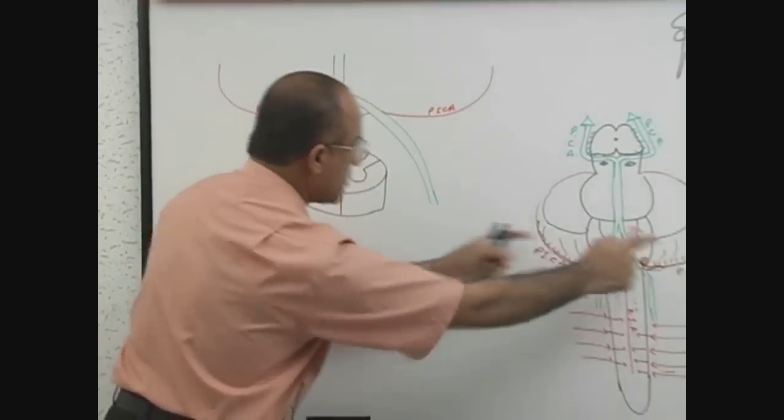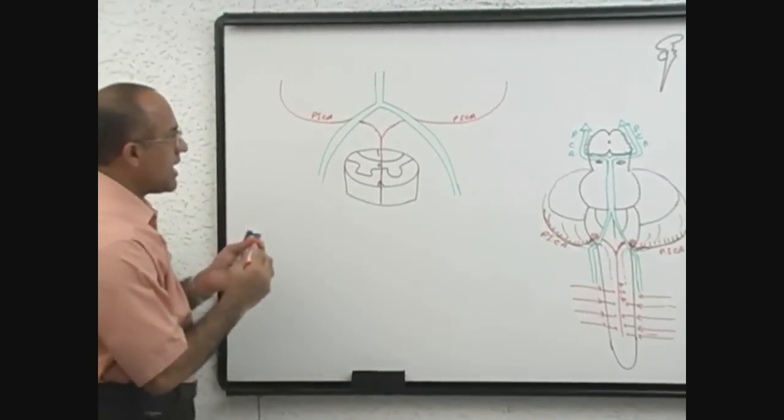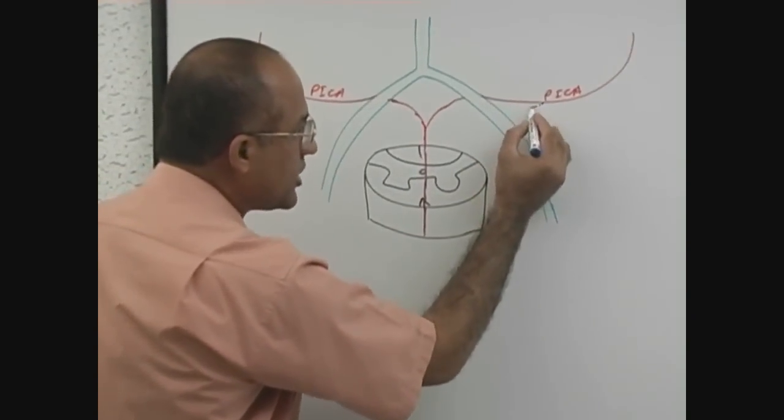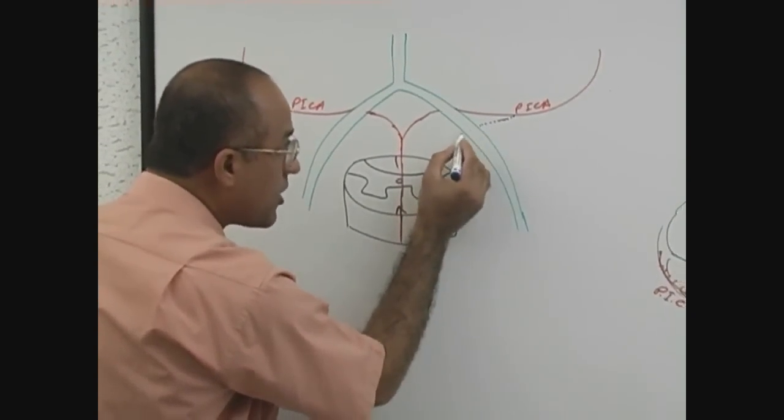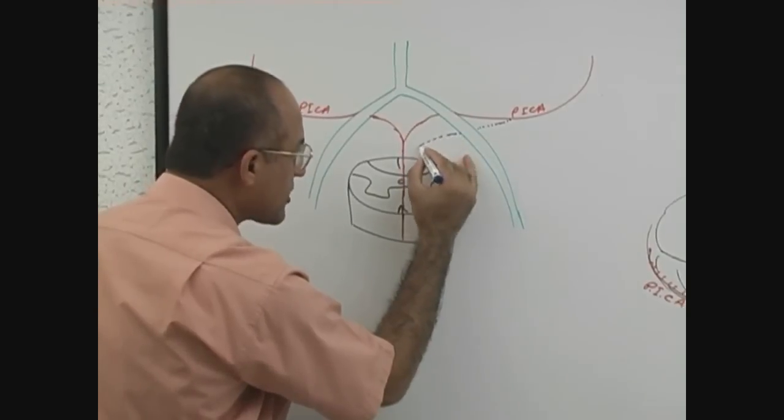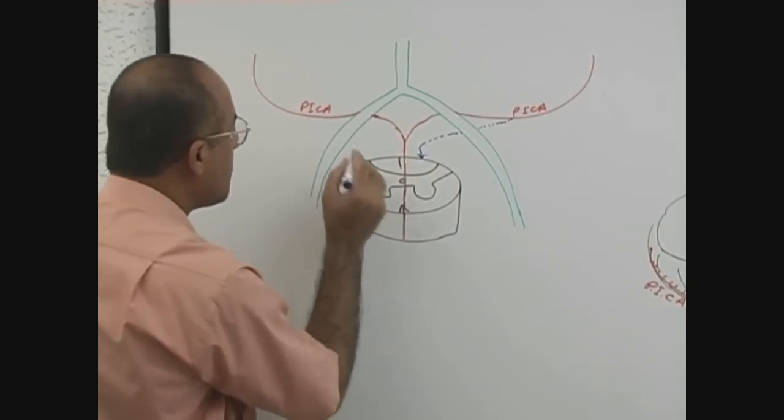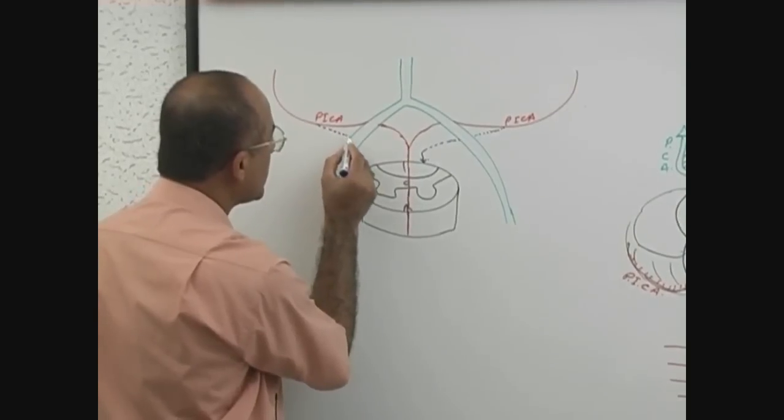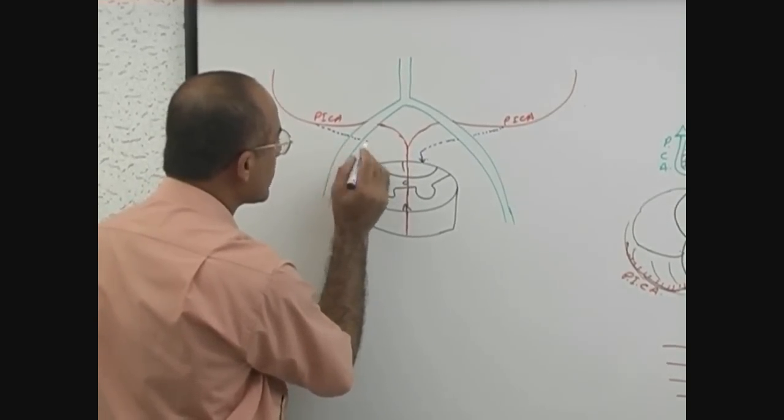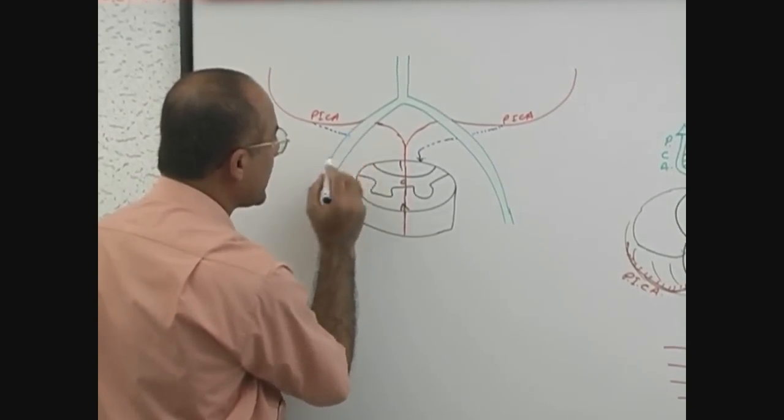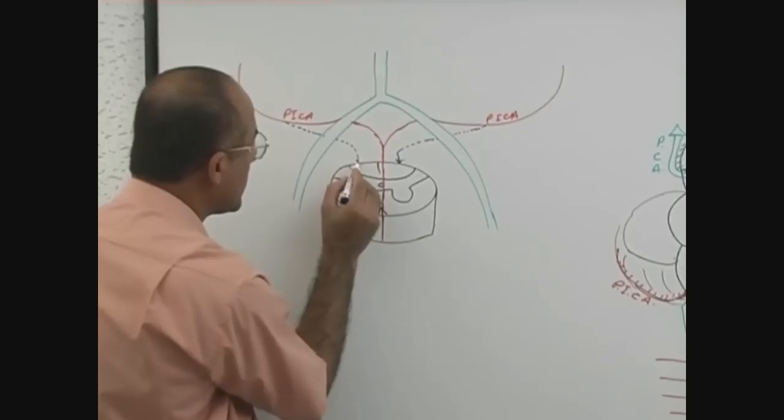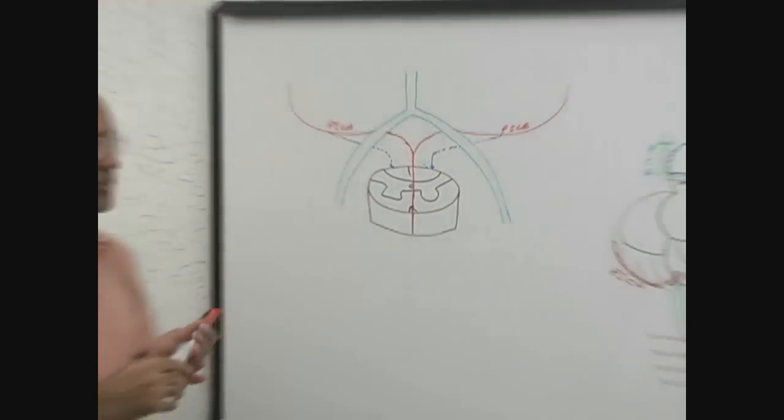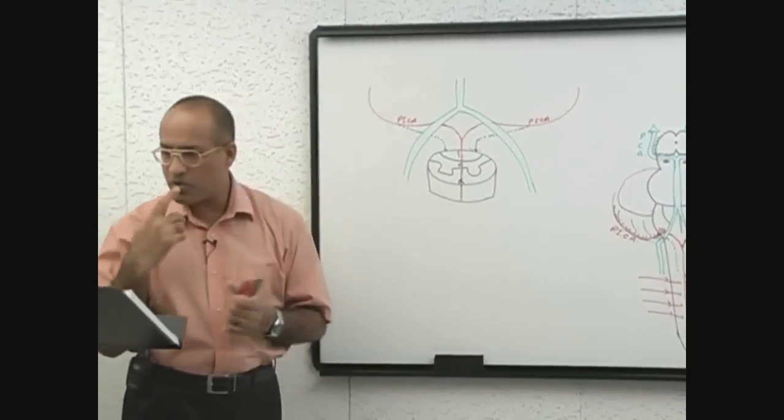This area I have enlarged just to show you. Actually, posterior spinal artery takes origin from PICA or from vertebral artery and then they descend on the back of the spinal cord, right, just behind the posterior roots. Is that clear? No problem up to this?